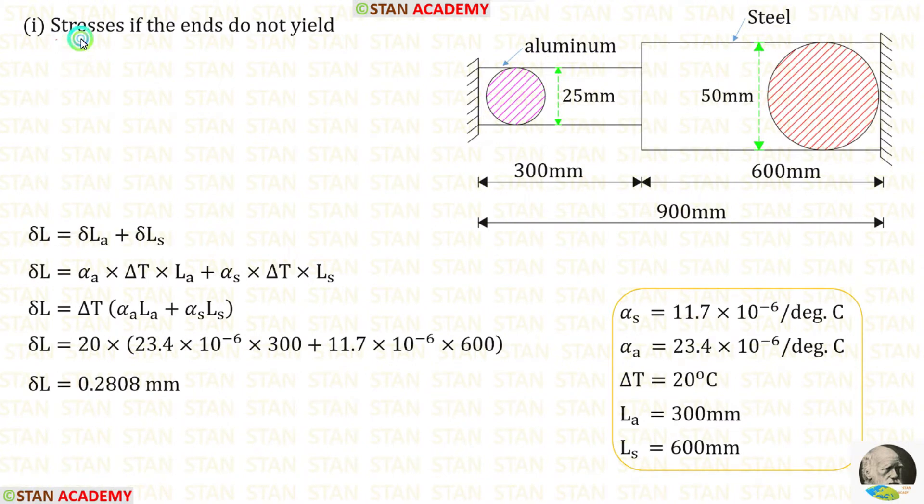Now we are going to find the stresses if the ends do not yield. The total change in length delta L will be equal to the summation of change in length in aluminum and steel. We know that the formula to find the change in length due to temperature change is alpha into delta T into L. So for delta L_A, it is alpha_A into delta T into L_A. For delta L_S, it is alpha_S into delta T into L_S. We can take delta T outside. Then let us apply the values of alpha_S, alpha_A, delta T, L_A and L_S. After the calculation, we are getting delta L which is equal to 0.2808 millimeter.